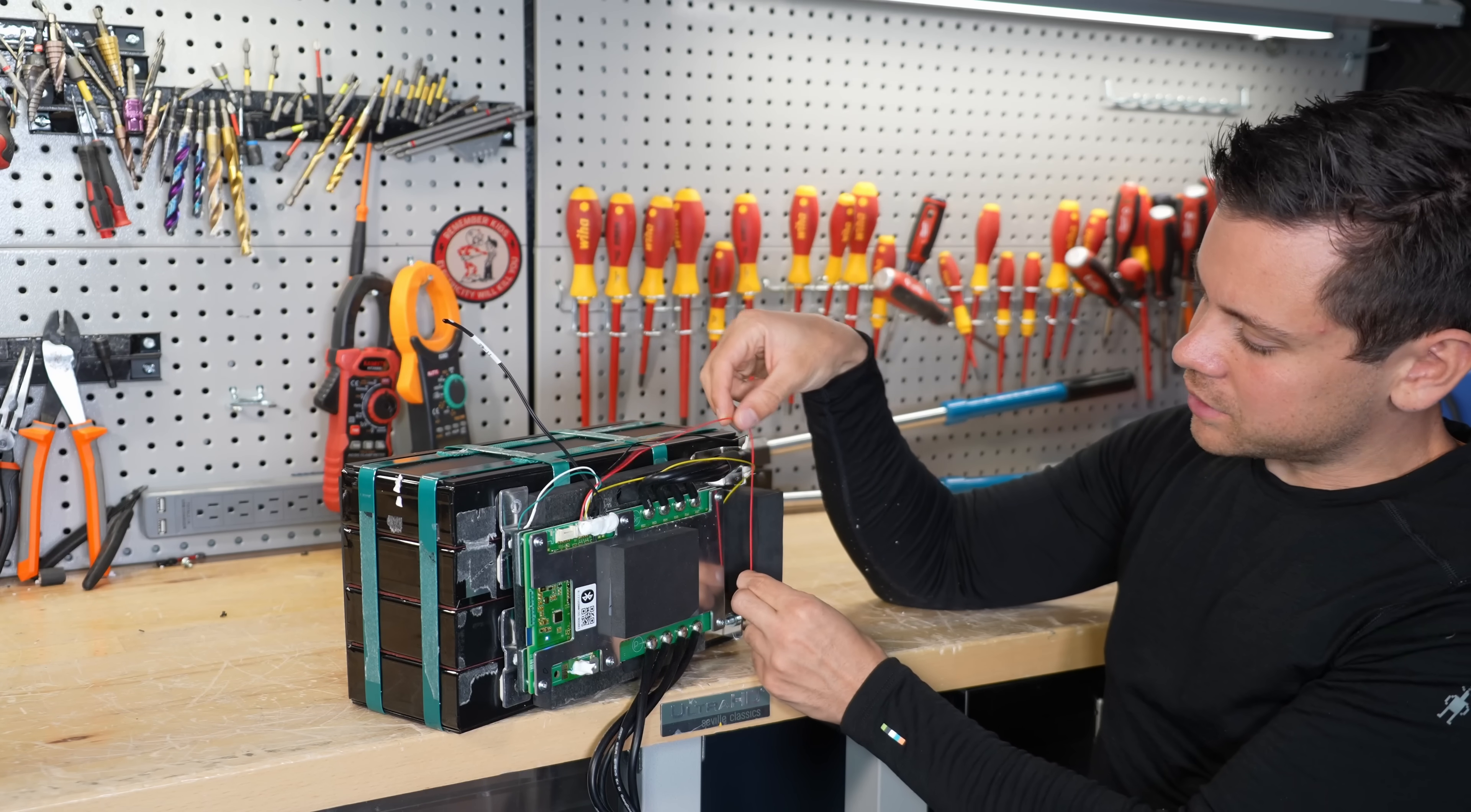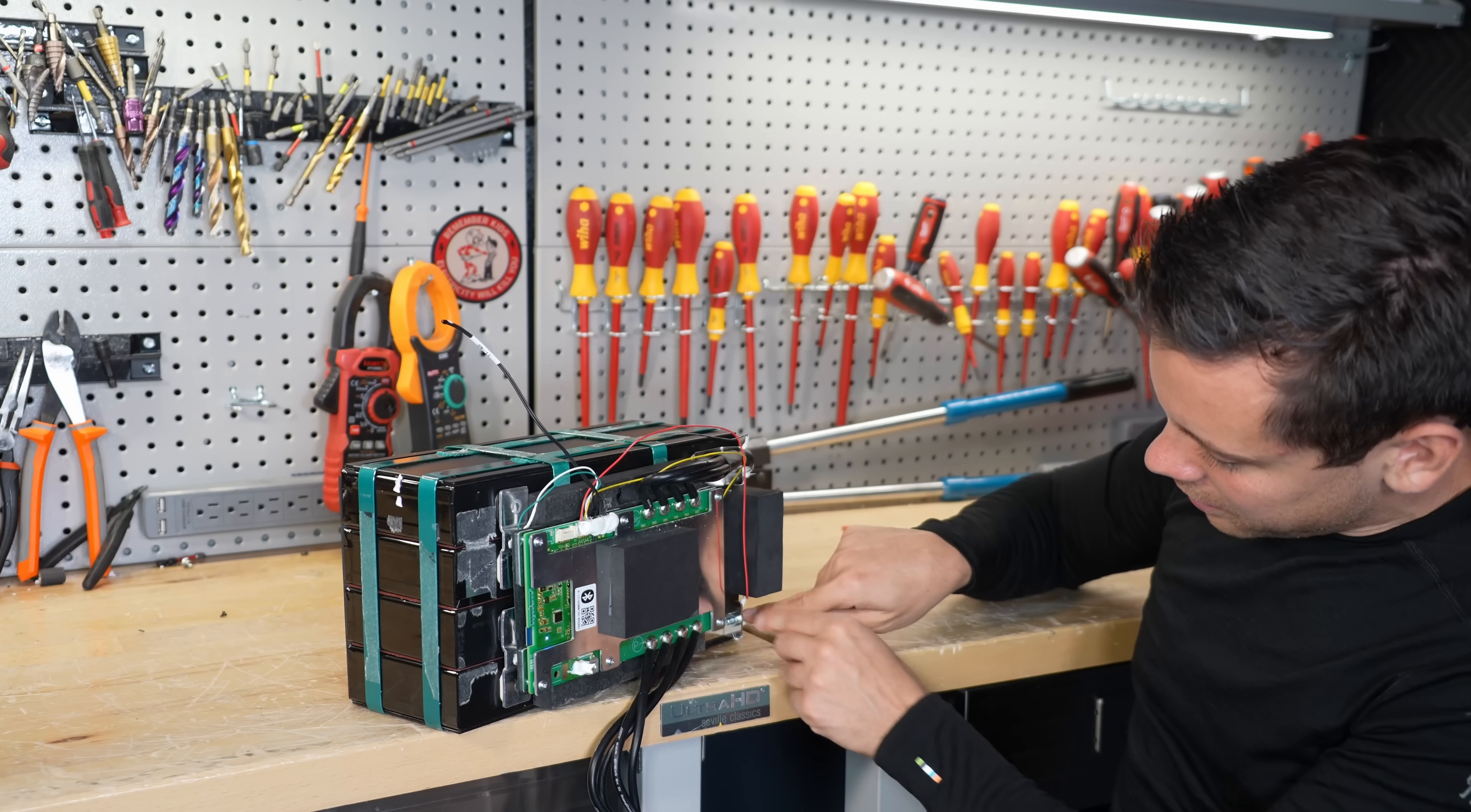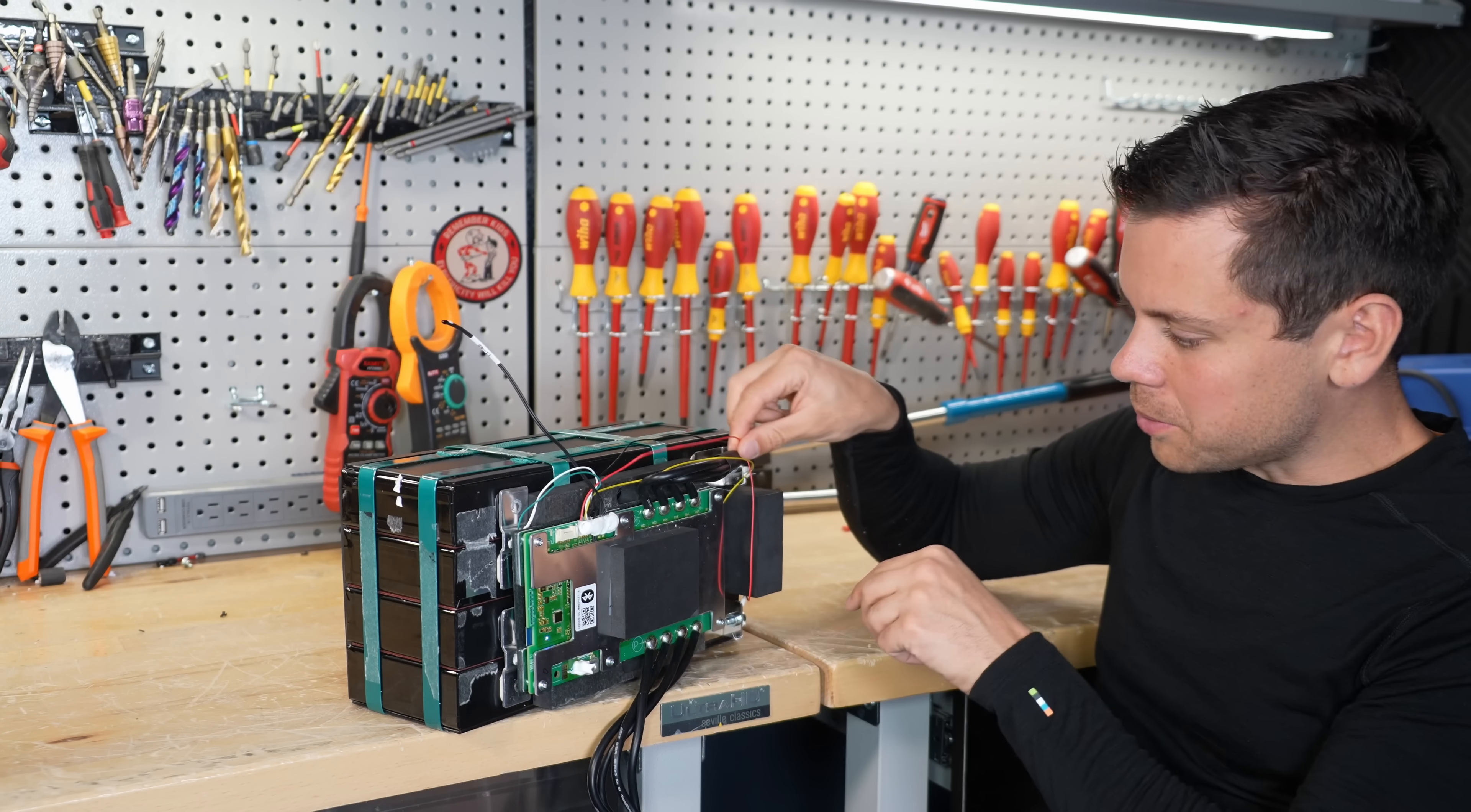Like for example, look at this balance cable. It was attached to the negative and the positive. And if this were to rub down from vibration, which again,